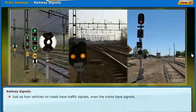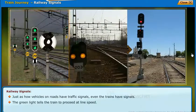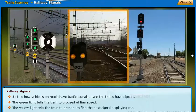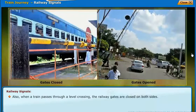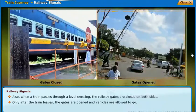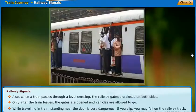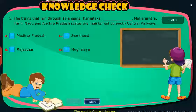Just as vehicles on road have traffic signals, trains also have signals. The green light tells the train to proceed at line speed. The yellow light tells the train to prepare to find the next signal displaying red. The red light tells the train to stop. Also, when a train passes through a level crossing, the railway gates are closed on both sides, and only after the train leaves are the gates opened for vehicles. While traveling in a train, standing near the door is very dangerous — if you slip, you may fall on the railway track.